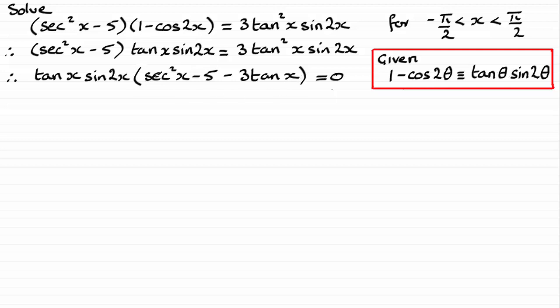then we've got it multiplied with sec² x minus 5. Okay, that gives us that term there. And if I've subtracted this term from both sides, you can see that tan x sin 2x times minus 3 tan x would give me negative 3 tan² x sin 2x.